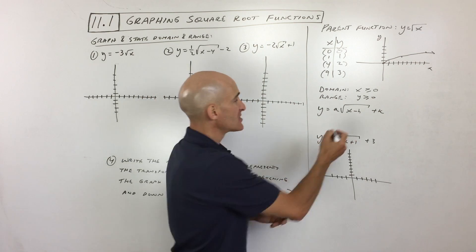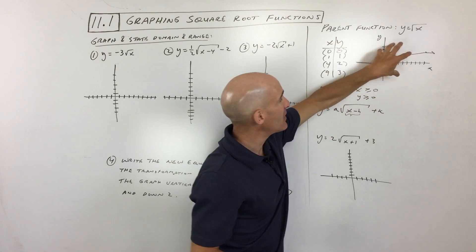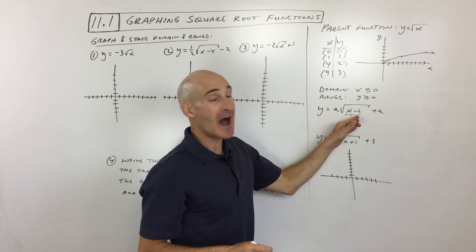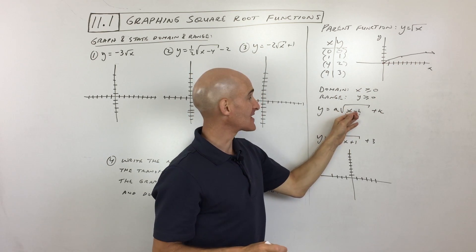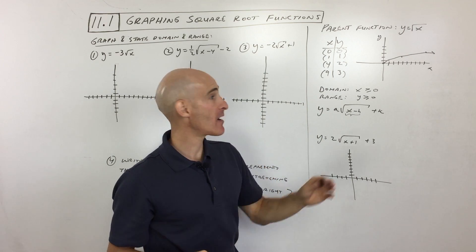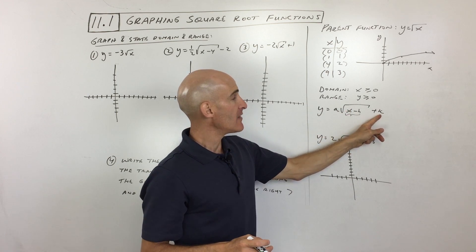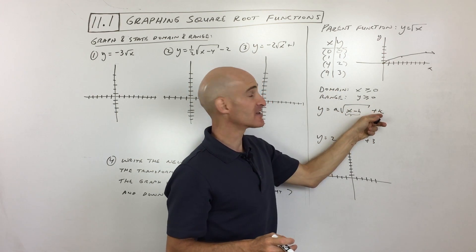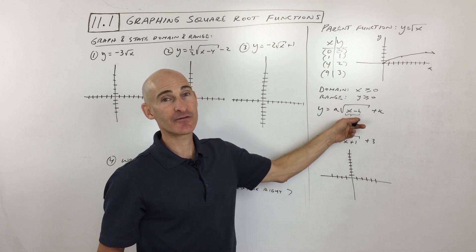The h value — the number grouped with the x — affects the horizontal direction; it shifts the graph left or right. But it has the opposite effect: if this was x minus two, it actually goes right two. If it's x plus two, it would go left two. The k value — not grouped with x, not underneath the square root — affects the vertical shift up or down. If it's plus three, it shifts up three; if it's negative three, it shifts down three. So k has the same effect as its sign, while h has the opposite.